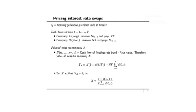Let's see how an interest rate swap is priced. Let R_t denote the floating unknown interest rate at time t. Consider a swap whose cash flows at time t equal to 1 through T are as follows. Company A, which takes on the long position in the swap, receives a notional principal N times the random interest rate prevailing at time t minus 1. So the cash flow received at time t is N times R_{t-1}, and it pays the same notional principal N times a fixed interest rate X.